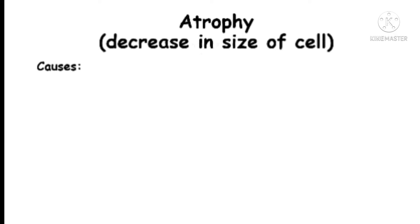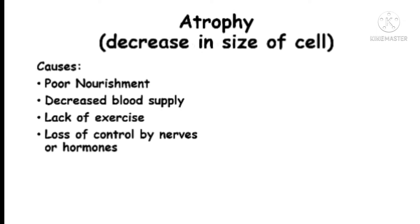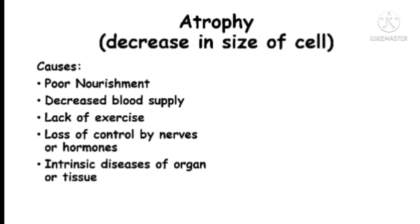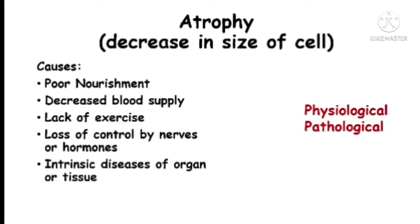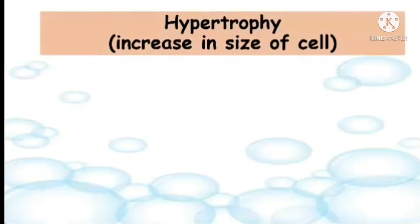First, we will discuss atrophy, which is basically the decrease in the size of the cell. The causes of atrophy include poor nourishment, decreased blood supply, lack of exercise or workload, loss of control by nerves or hormones, and intrinsic disease of the tissues or organ. It can be physiological and pathological.